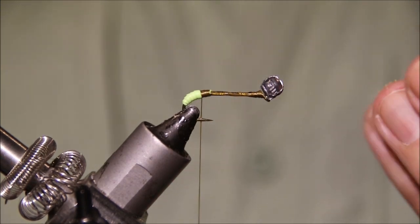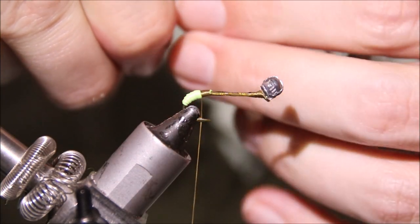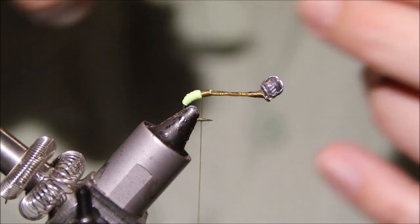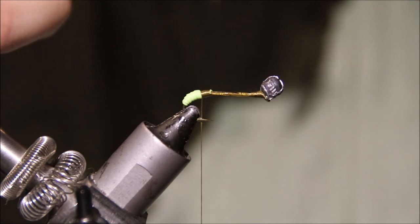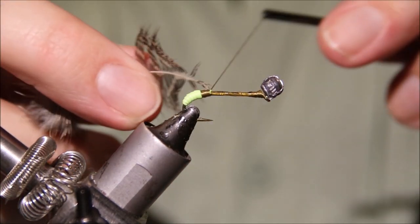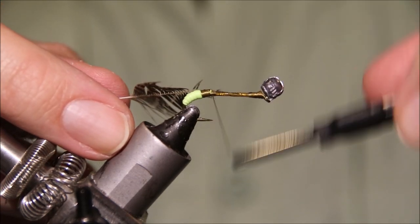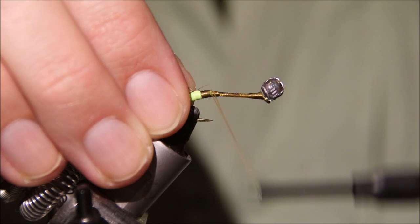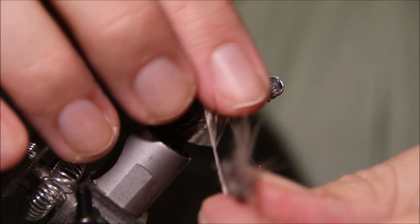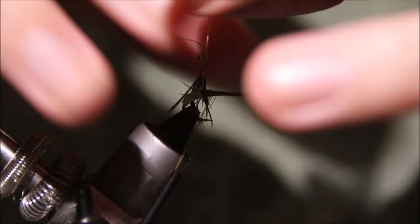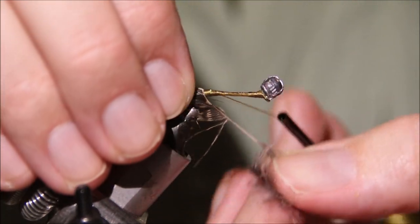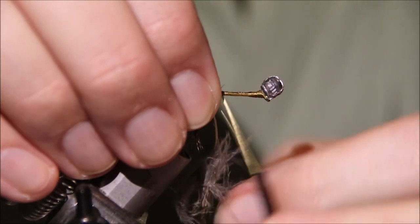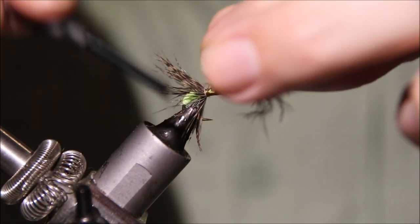I'm going to tie it in by the tip, so I'll just use my hackle pliers, get a grip of it and pull back the fibres to expose the tip. Then I'll offer this in, take two or three wraps, and then wind this folding it as I go. I'm just going to use up the whole hackle. Obviously it's far more legs than the caddis would naturally have, but it gives you a nice bit of movement.